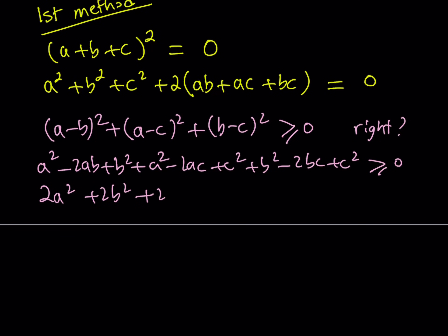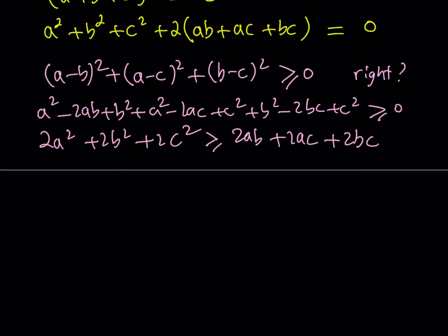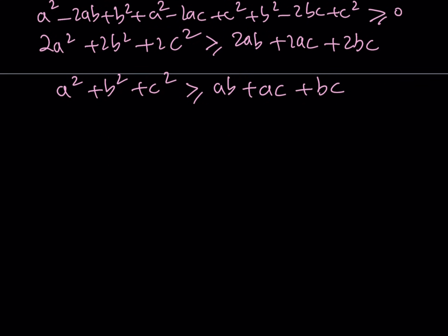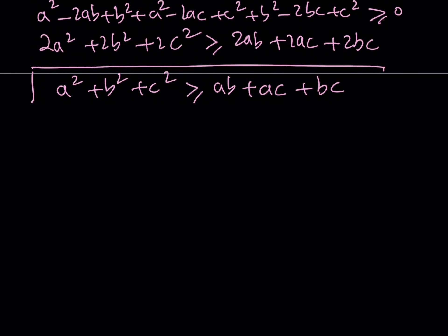Dividing both sides by two gives the well-known inequality — which can be proven in different ways — that a squared plus b squared plus c squared is greater than or equal to ab plus ac plus bc. So if you have three real numbers, the sum of their squares is always at least as large as the sum of their pairwise products. This is the inequality we are going to use.